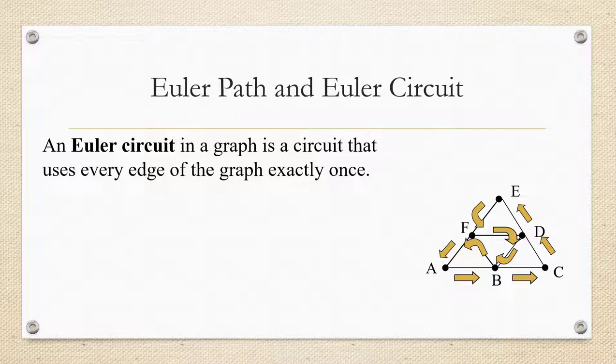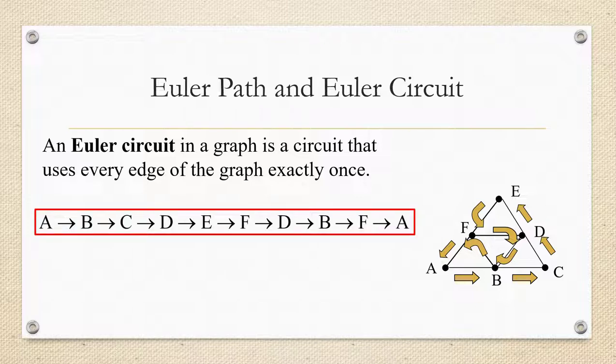So here's an example of a circuit that hits every edge of the graph exactly once, beginning and ending at the same vertex. We would write this circuit as A to B to C to D to E to F to D to B to F to A.